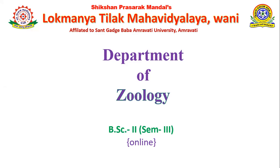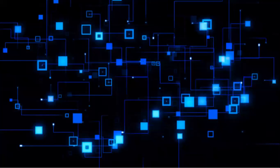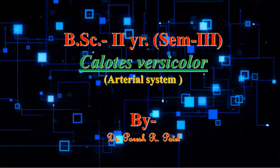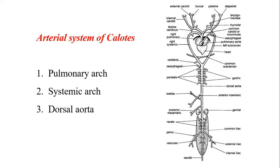Hello everyone and welcome to our next lecture on the arterial system of Calotes. The arterial system of Calotes consists of three main branches of vessels which supply oxygenated blood to various parts of the body. These three main vessels are the pulmonary arch, systemic arch, and dorsal aorta. A complete diagram of the arterial system shows various blood vessels supplied to various parts of the body, and we are going to study each part in detail.